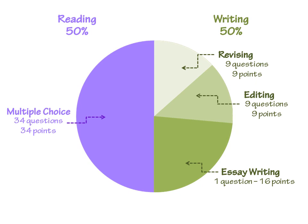Altogether there are four sections of the English EOC exam. The multiple choice section of the reading portion of the test is the most valuable, because it's half of the overall EOC exam score — it has 34 multiple choice questions for 34 points. The essay writing section is also really important, because the essay is a sizable chunk of the writing section — it's almost 25% of the overall EOC exam and is worth 16 points. The revising and editing questions, about 18 questions total — nine per section — are worth 18 points.